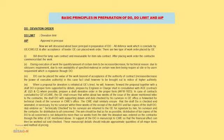When a proposal for deviation is initiated at GE level, he will forward the proposal together with a draft DO in proper form, supported by details prepared by the Engineer-in-Charge, and in consultation with the AG contract or JE where possible, prepare a draft Deviation Order in the proper format.